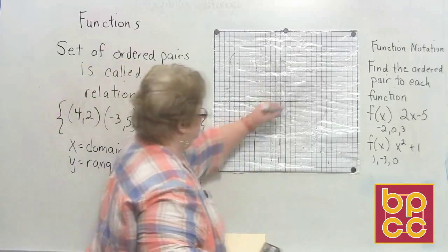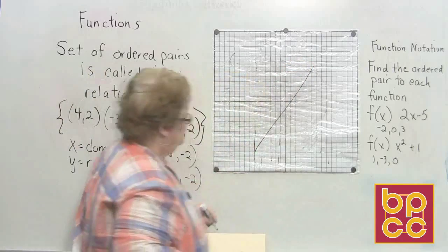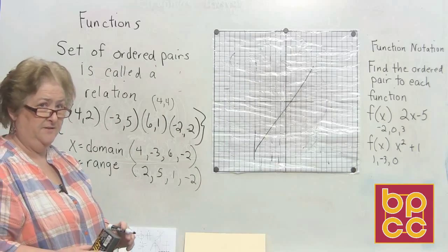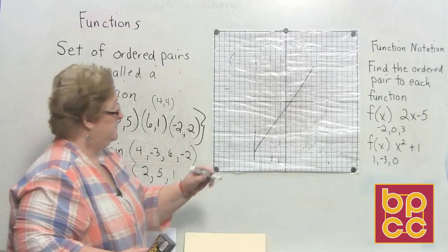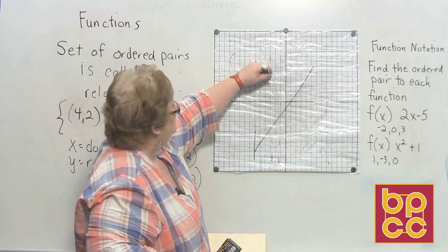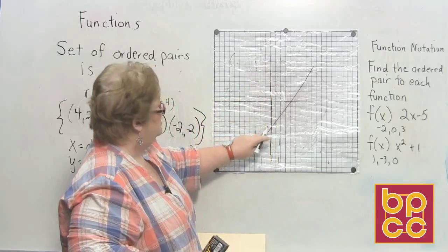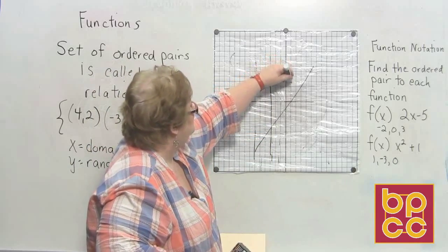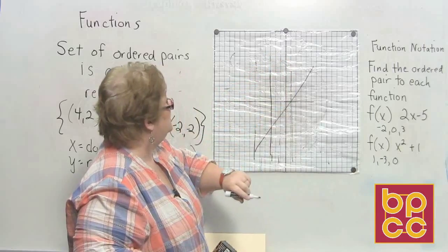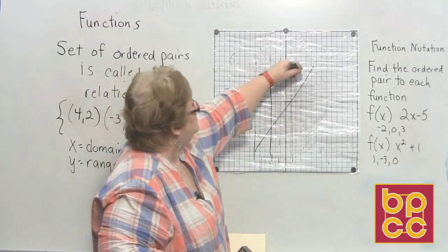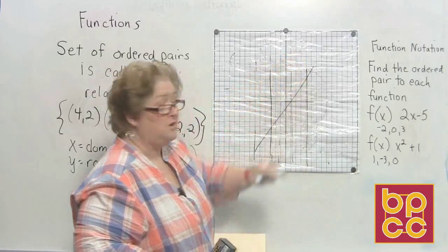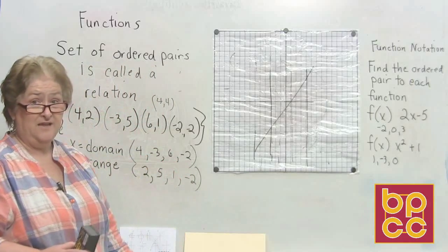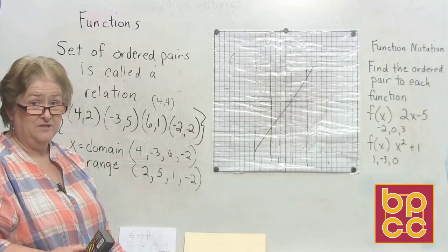How about this one? Start thinking about drawing your vertical lines here. I'll just pick one — just crossed once. Let me try another one — just crossed one time on that vertical line. Just crossed one time on that vertical line. So I think we can clearly say that that represents a function.